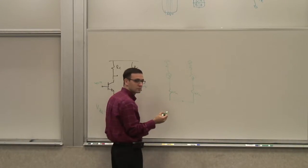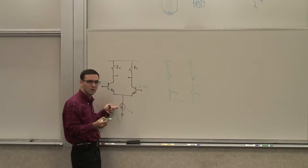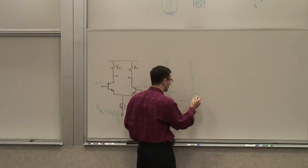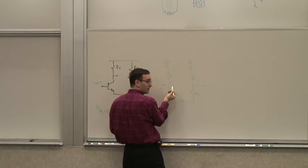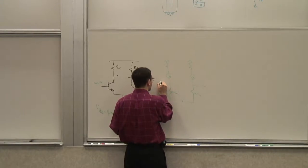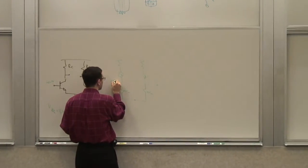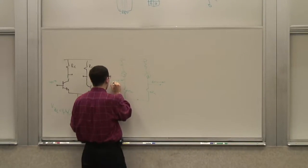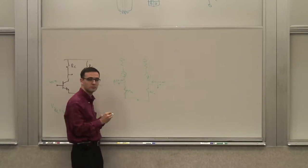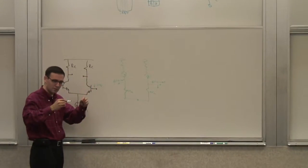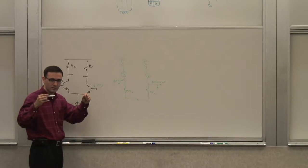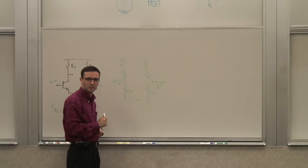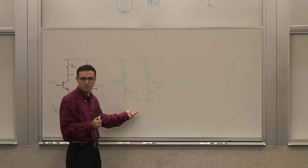What is the effect of the current source in the AC small signal model? It's a constant, so it will be null — it's open. So now I only see the small signal variational part. I see plus delta V here of one millivolt and minus delta V here of one millivolt. This is going to go up by one millivolt and this is going to go down by one millivolt. What happens to the tail node? You have two resistors of equal size.